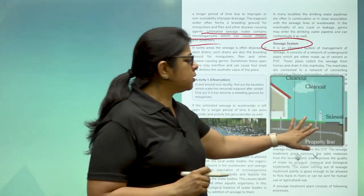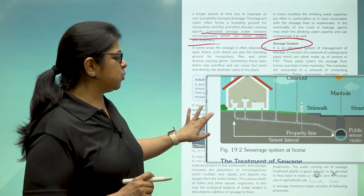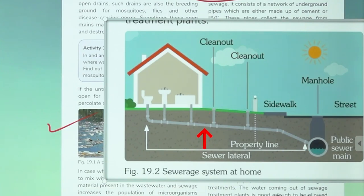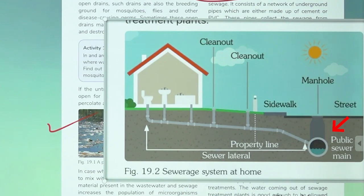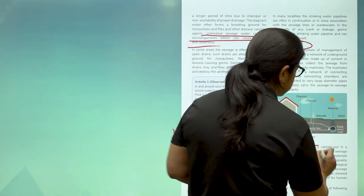First step to a good neighborhood is good sewage and cleanliness within the neighborhood. Here we can see in this picture a property line, which defines the area covered by the house. There are clean-out drain pipes and a sewer lateral. All the waste that comes out of our house goes to the manhole. This manhole, running under the street, is a public sewer system that runs to the sanitation department of the city or town, where the treatment of sewage has to be done.